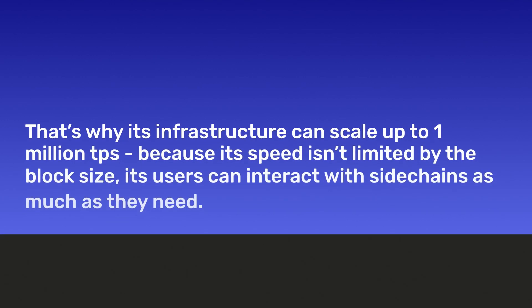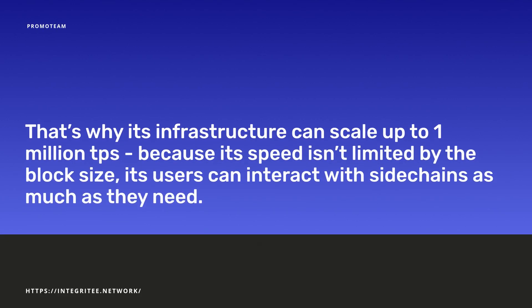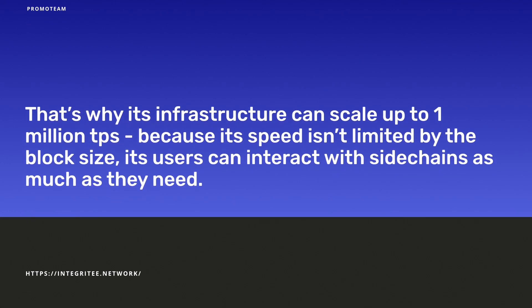The validators of the same sidechain synchronize the state with each other and send the hash of the blocks to the parachain to finalize them. That's why this infrastructure can scale up to one million TPS, because its speed isn't limited by the block size — users can interact with sidechains as much as they need.